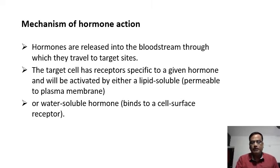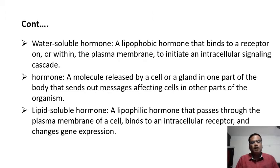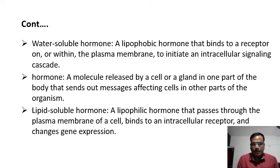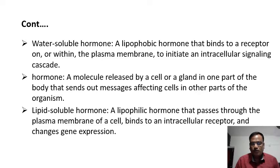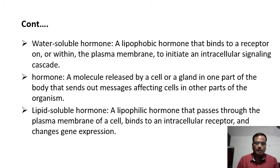Protein hormones and lipid hormones have different ways of interacting with receptors. A water-soluble, lipophobic hormone binds to a receptor on or within the plasma membrane and initiates an intracellular signaling cascade. A hormone is a molecule released by a gland in one part of the body — a chemical messenger — that travels to the target organ and reaches the target cell to perform its function.